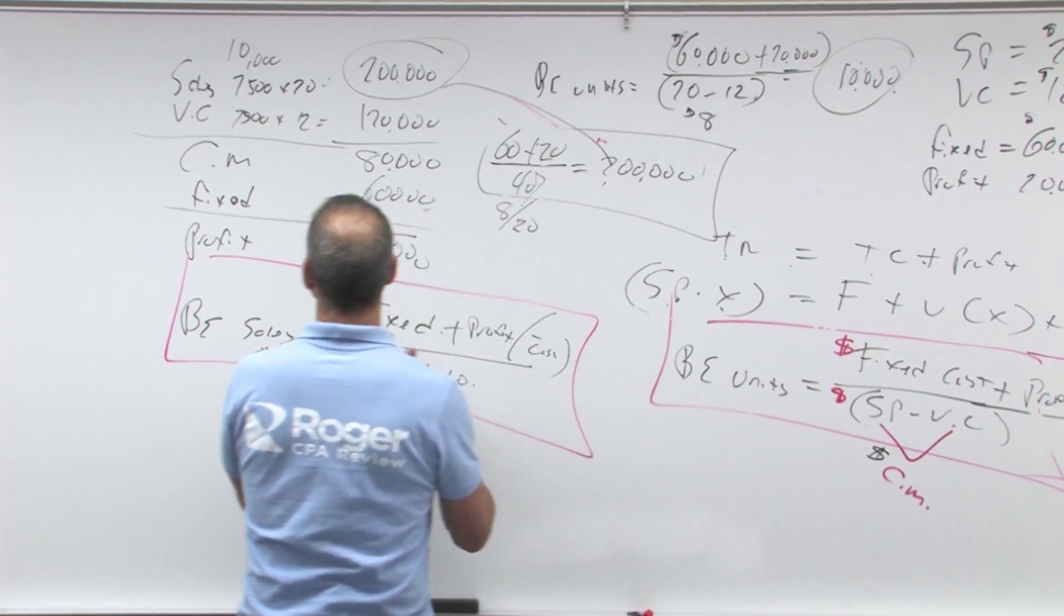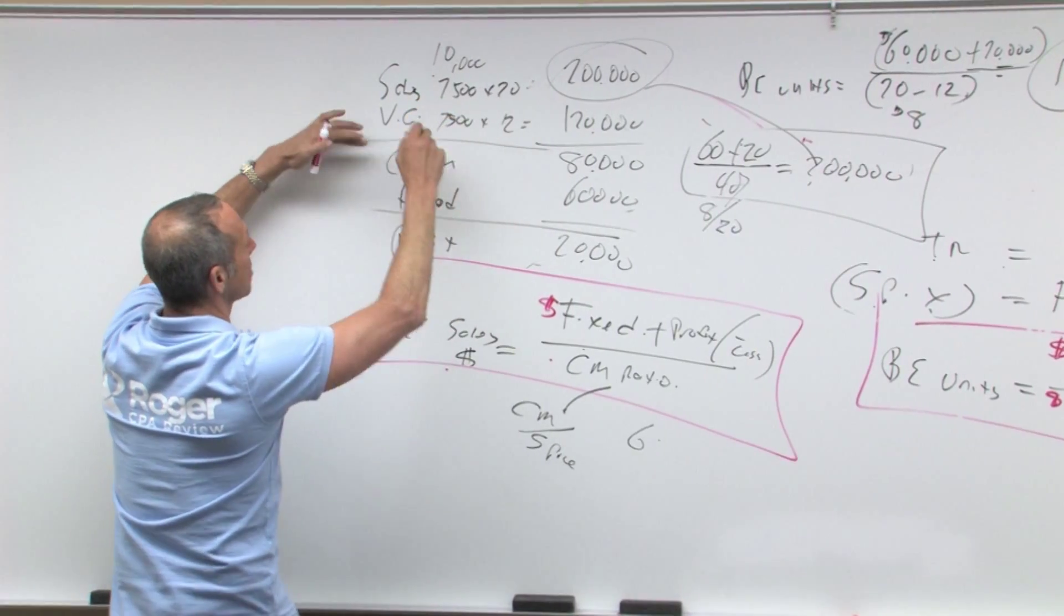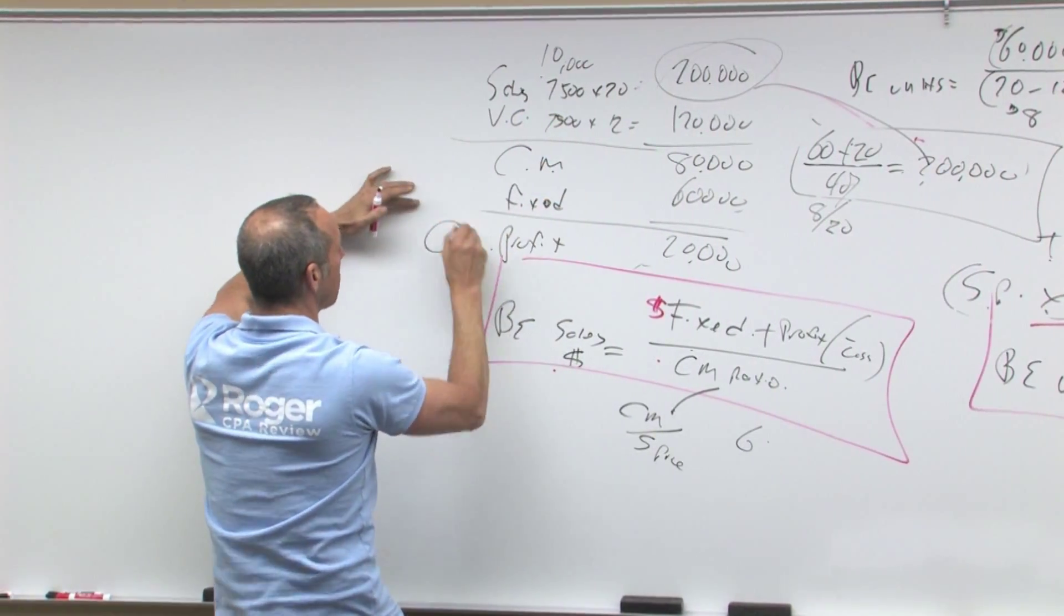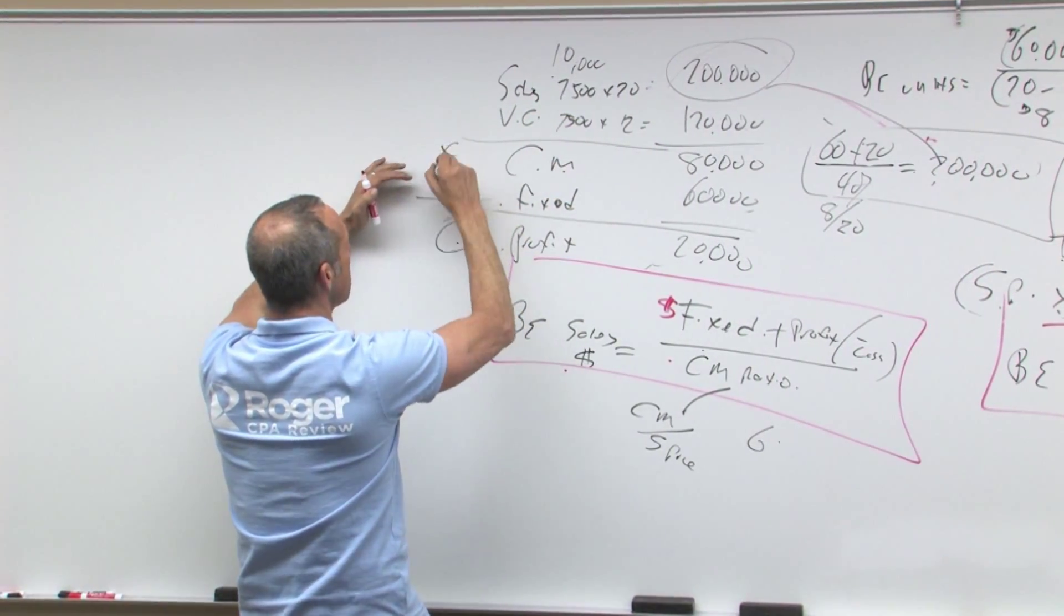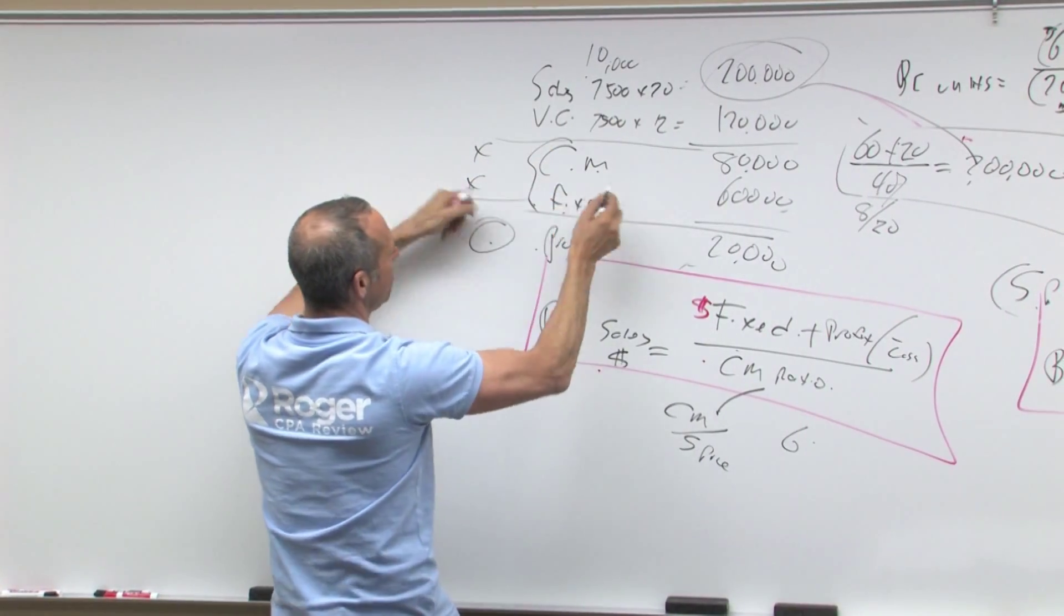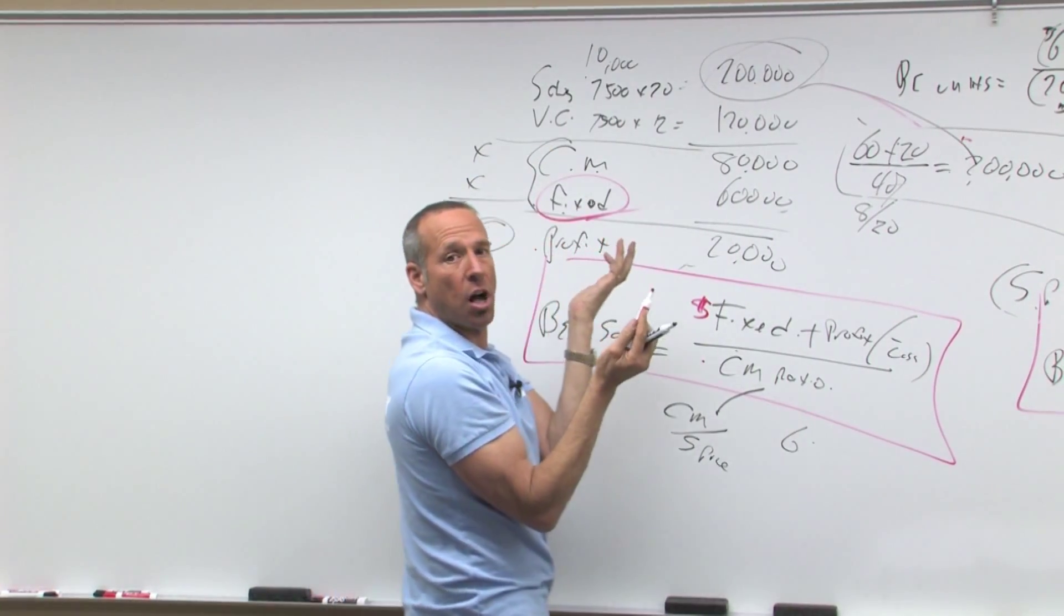let's come over here. Sales minus variable cost is contribution minus fixed profit. At breakeven, that means this number has to equal this number. That means contribution margin equals what? Your fixed cost.